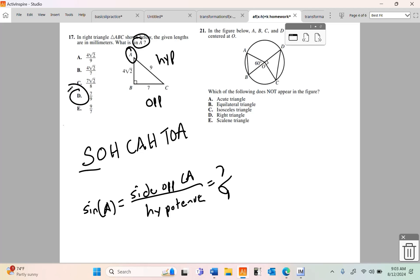In right triangle ABC shown below, the given lengths are in millimeters. Who gives a crap what they're in? What is the sine of alpha? So, most people are taught this. SOH CAH TOA. And we're interested in sine. So, the sine of, in this case, angle A, is going to be the side opposite angle A divided by H, which stands for hypotenuse. So, if I'm an angle A, 7 is opposite and H is the hypotenuse. So, I'm going to say 7 ninths and be done with it. Choice D.